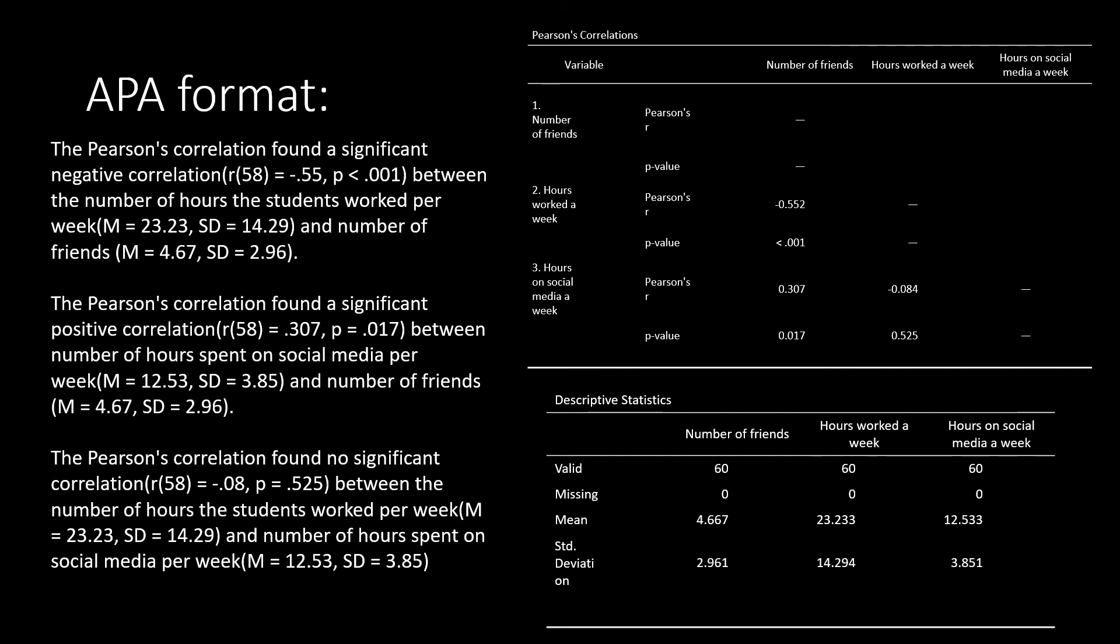When it comes to a Pearson correlation coefficient, there are a few things that are important to convey to the reader. The first is, what statistical test are we running? In this case, we're running a Pearson's correlation. So we've conveyed that to them here in our first sentence. We then want to convey whether or not we had a significant correlation or an insignificant correlation. And we also want to convey the direction of that correlation. In this case, we have a negative correlation.